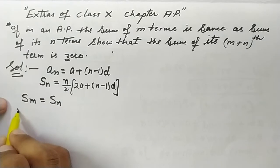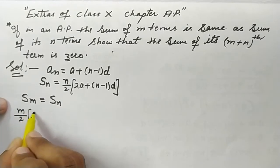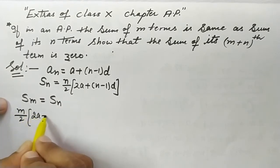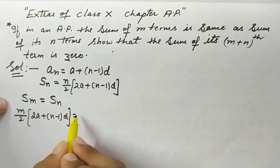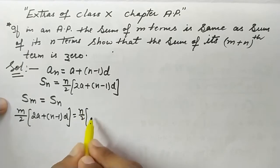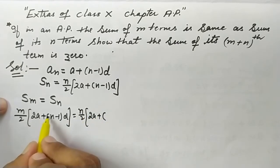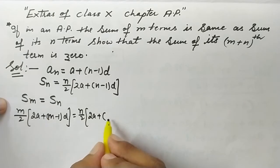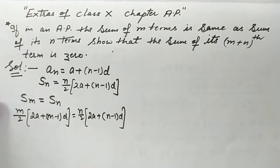Starting from Sm = Sn, we apply the sum formula: m/2 × (2a + (m−1)d) = n/2 × (2a + (n−1)d).